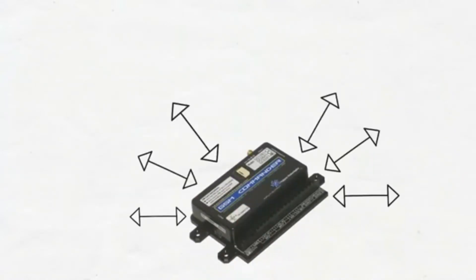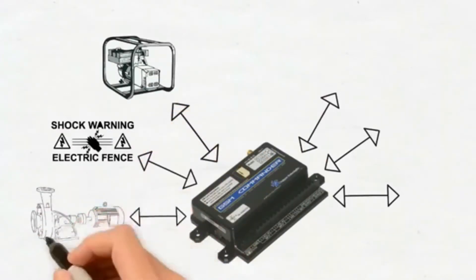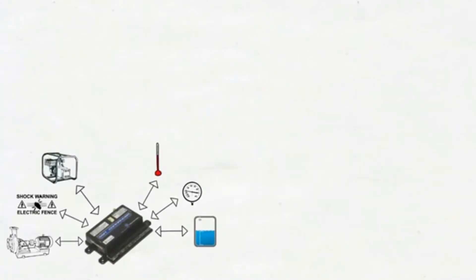You can connect anything, from simple on-off devices like generators, electric fences, and pumps, to measuring probes for things like temperatures, pressures, or perhaps tank levels. If it cannot be connected to the GSM Commander, then it cannot be connected.